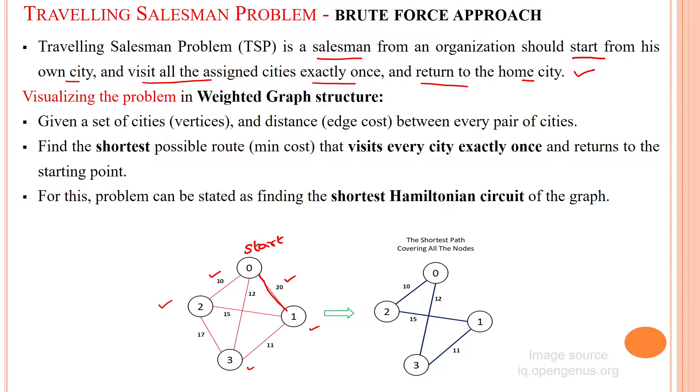So here based upon the cost we have to check which is the shortest possible route which needs minimum cost for the traveling, and he will visit every city exactly only once and finally return to the starting point, that is home city.